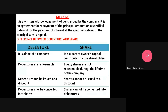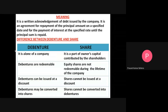Debenture holders are entitled to get a fixed rate of interest whether the company has a loss or profit. But when a person purchases equity shares, the company pays dividend only if it earns profit. Shareholders get dividend out of profit, but debenture holders get fixed interest regardless. The company must pay interest until the principal sum is repaid.